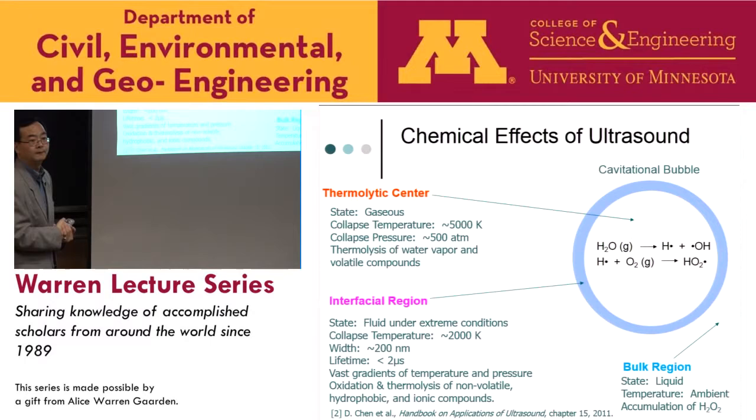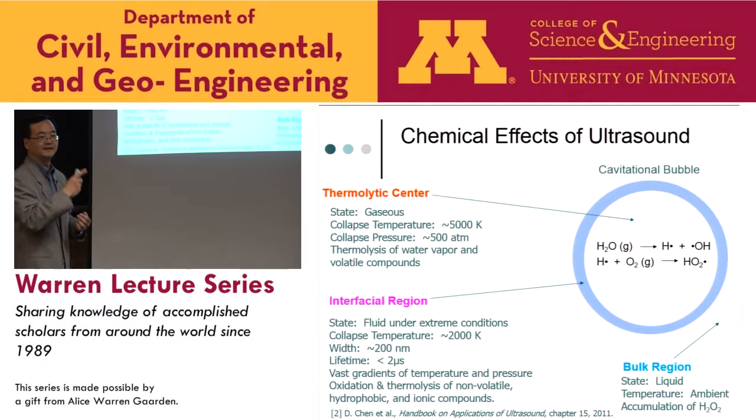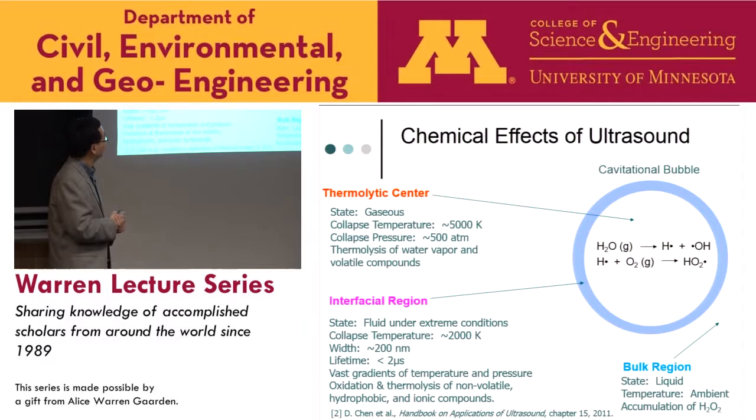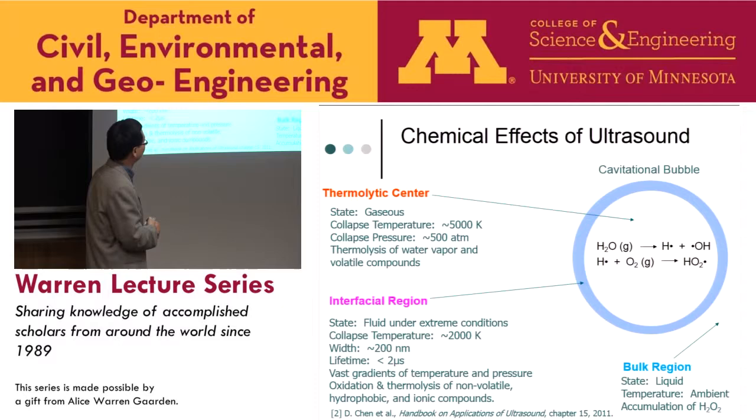It's 5,000 Kelvin — yes. The temperature looks very dramatic, but the amount of heat generated is very small because the gradient is huge. The bubble size is typically between one micron and 100 microns — very small, but the temperature is huge.